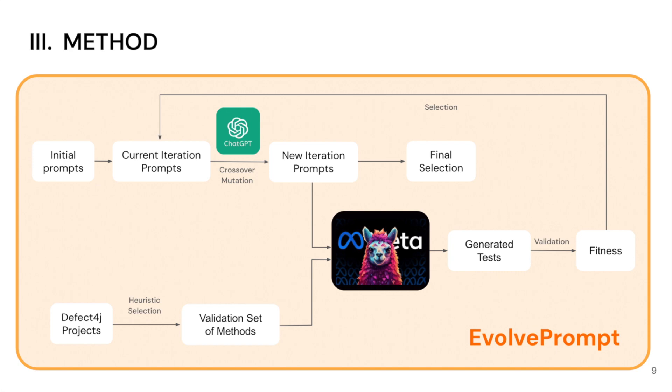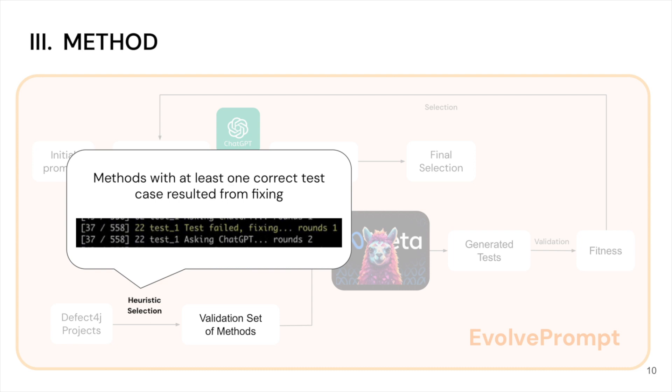We keep only a fixed size of population based on their fitnesses and go on to the next iteration. After the last iteration, the best prompt in the population will be chosen. In order to calculate the fitness of the prompts, we cannot use the whole Defect4J dataset since it will take too much time. Therefore,